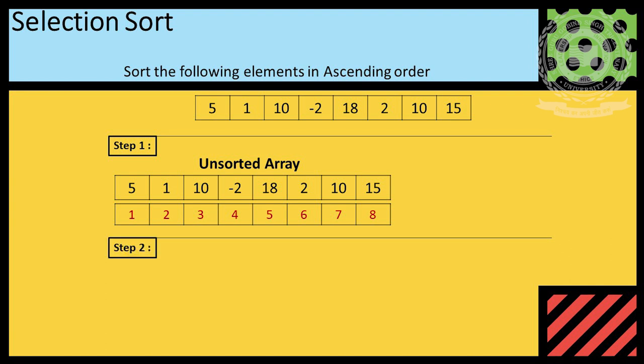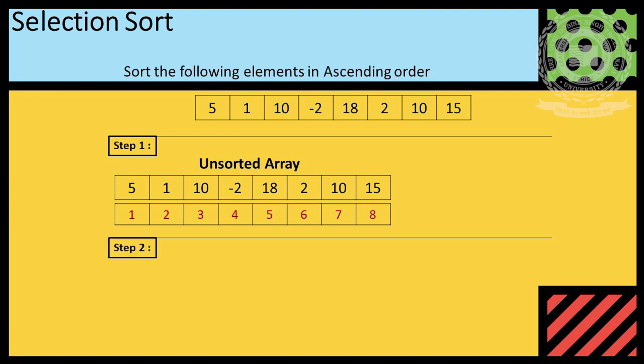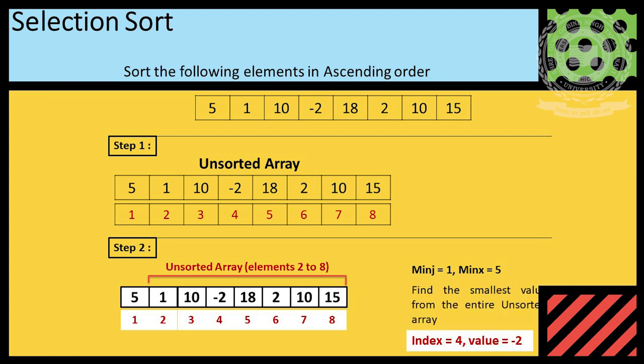In step 2, we search minimum element from rest of unsorted array and compare it with 5. And swap it if necessary. We found the value is minus 2, so minus 2 and 5 are swapped.